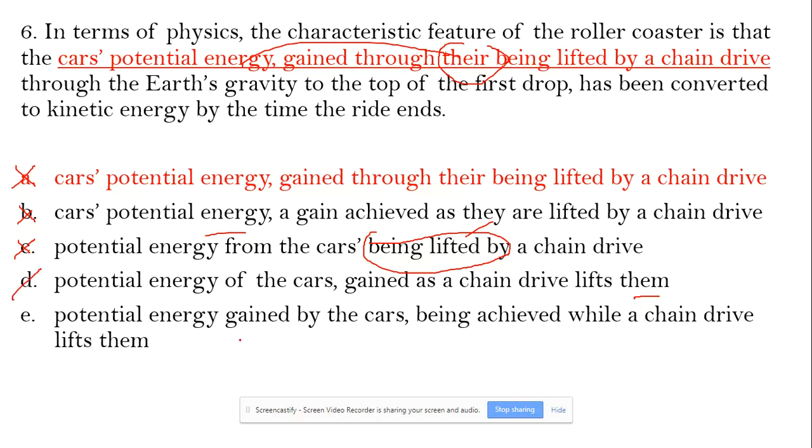E: potential energy gained by the cars being achieved. So, energy gained and energy achieved—that's called redundancy. That's why E is out. D is the best choice.